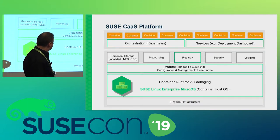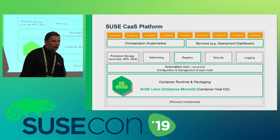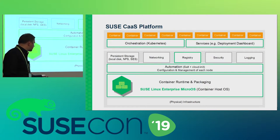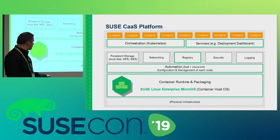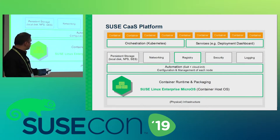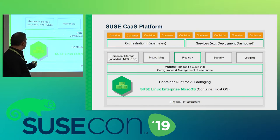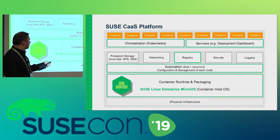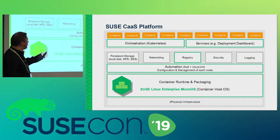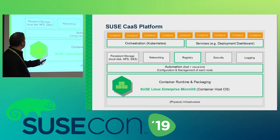Looking at the CASP platform architecture from bottom to top: first the physical infrastructure, then SUSE MicroOS running with the container runtime and packaging, then an automation layer with Salt and cloud-init, then additional components like persistent storage, networking, registry, security, and logging, then the orchestration layer — the Kubernetes cluster — with services like the deployment dashboard, and on top the running containers.